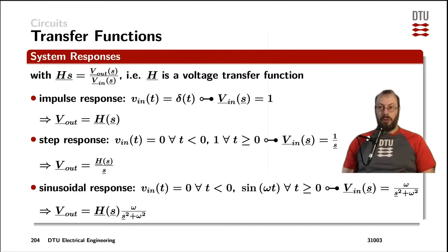To get the impulse response from a system, we apply the Dirac function, the Dirac impulse at the input, which is in the time domain simply the pulse, and in the frequency domain it converts to 1. That means that the output of the system is equal to the transfer function.